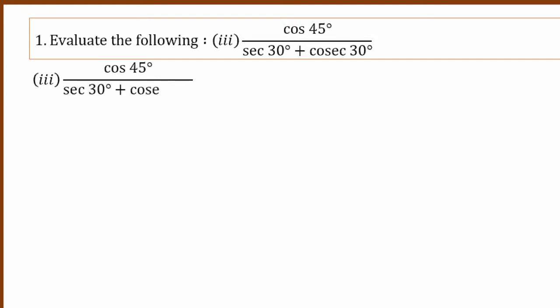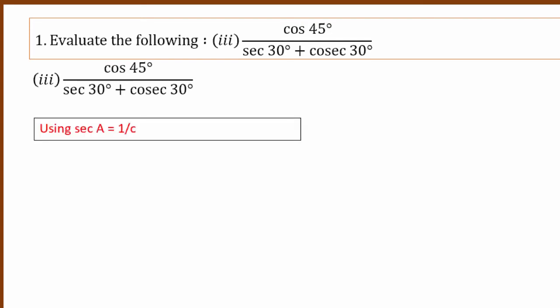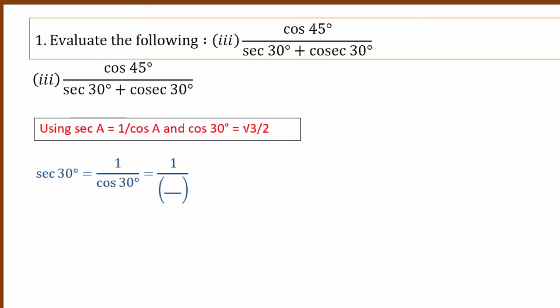The third question involves cos 45 degrees in the numerator, with denominator being secant 30 plus cosecant 30. Since secant a equals 1 by cos a, and cos 30 is root 3 by 2, secant 30 equals 1 divided by root 3 by 2, which gives 2 by root 3. So secant 30 equals 2 by root 3.